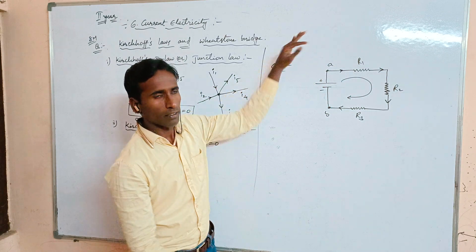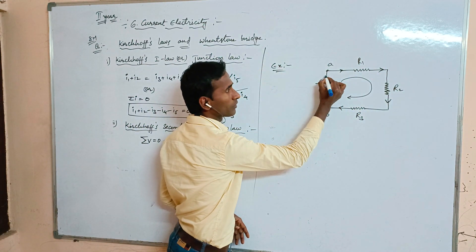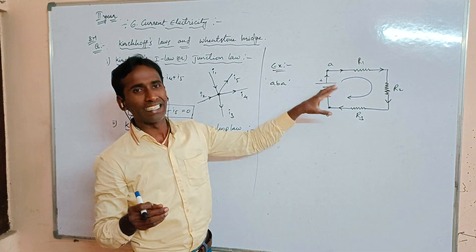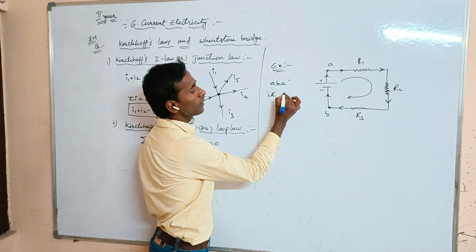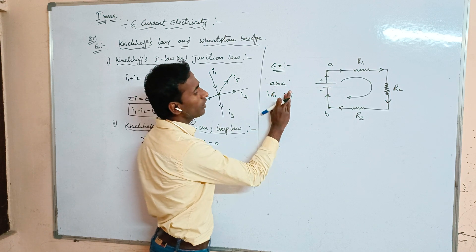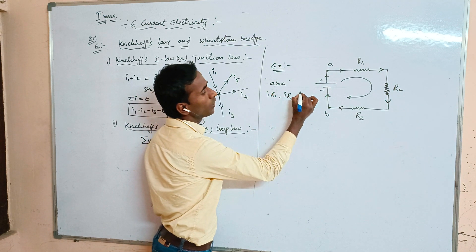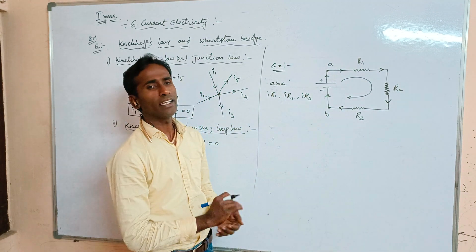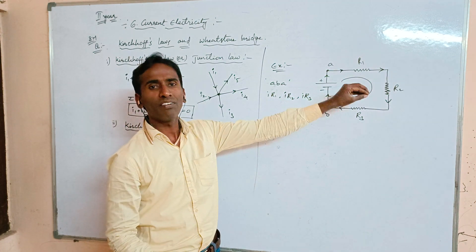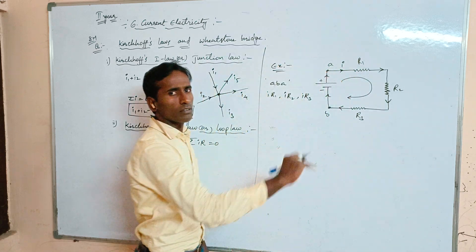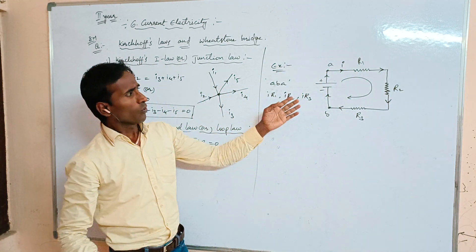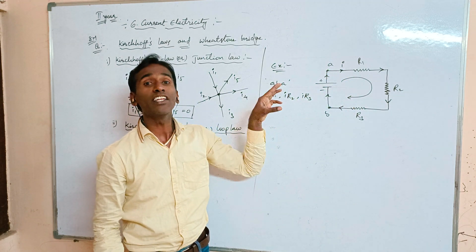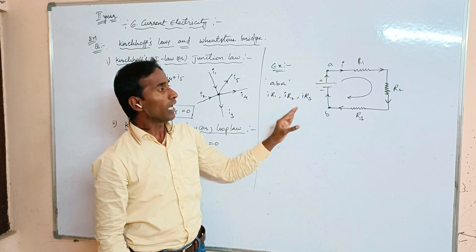For the closed path A→B→A, the potential difference drops across each resistor are ir1, ir2, and ir3, because by Ohm's Law V = IR. When traversing along the direction of current flow, the potential difference is taken as negative.